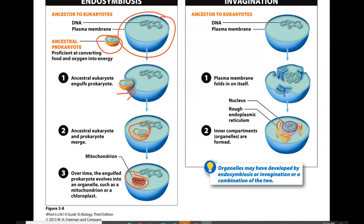Another theory is the invagination theory, which explains how the nucleus formed and how other membrane-bound structures were formed inside the cell. Starting with an ancestral eukaryote with linear DNA floating in the cytoplasm, over time the cell membrane starts to fold in on itself, creating a membrane-bound organelle that encloses the DNA — the nucleus — and also creating membrane-bound structures around that nucleus that become things like the rough and smooth endoplasmic reticulum.